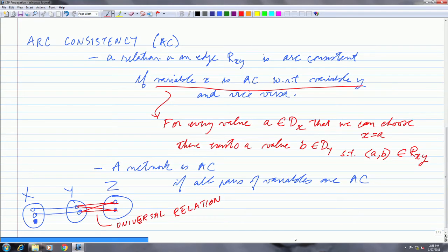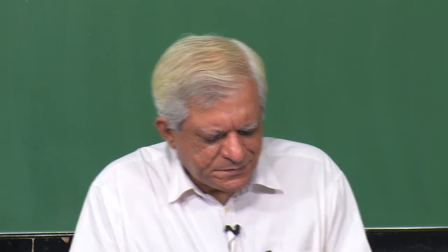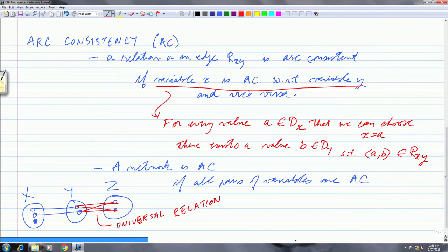In an example with variables x, y, z: if some value in the domain of x has no corresponding value in y's domain, then x is not arc consistent with respect to y. Consistency enforcement involves removing such values from variable domains to make the network arc consistent, avoiding dead ends in search.